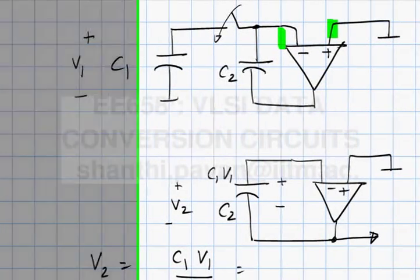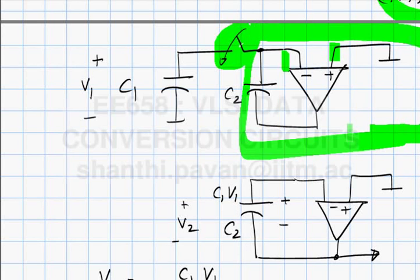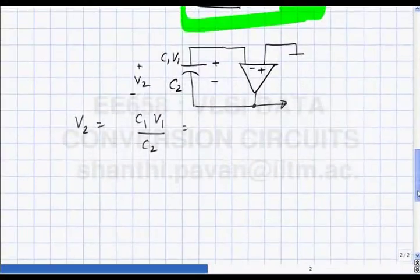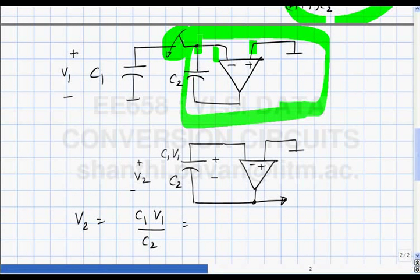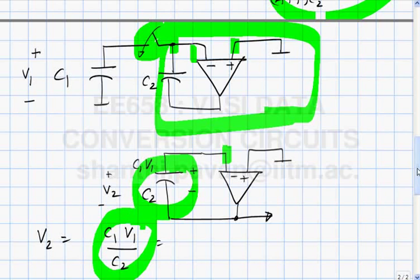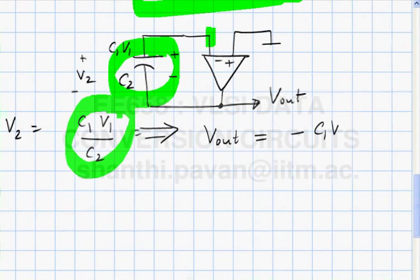When I short the two, going by the infinite capacitor analogy, the green box is an infinite capacitor. When I short them, the final potential must be 0. So the moment I close the switch, this potential goes to 0, and when I open the switch it remains 0. The voltage across C2 is C1·V1/C2, so the output voltage is -C1·V1/C2.